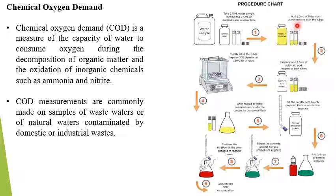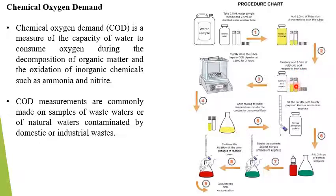Add 1.5 ml of potassium dichromate to both tubes — one containing the sample solution and one containing distilled water as the blank. Then carefully add 3.5 ml of sulfuric acid to both tubes.